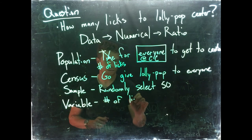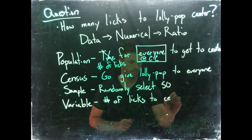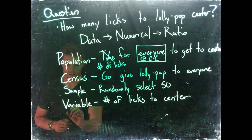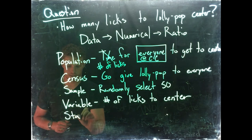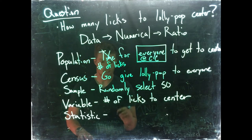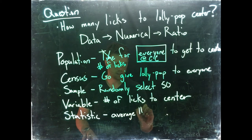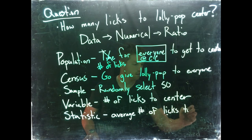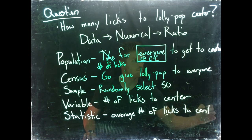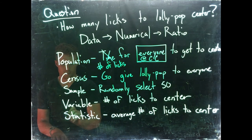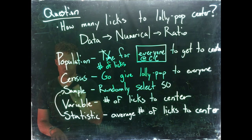Okay, so my variable for my data is number of licks to center, and my statistic would be something like one statistic could be the average, average number of licks to the center.